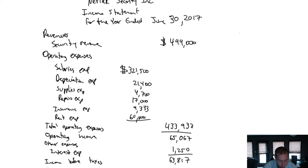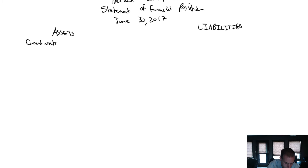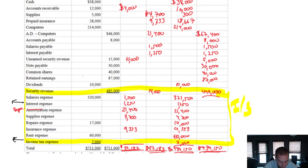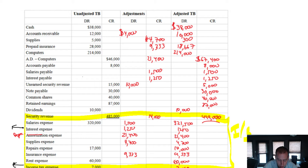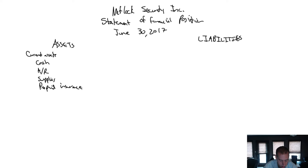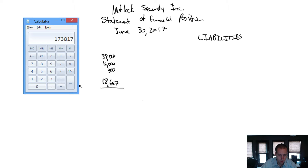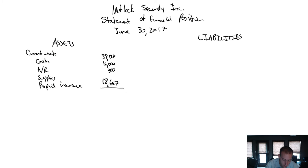So let's go through it: cash, AR, supplies, prepaid insurance. We're listing them in order of liquidity. Since we already have a trial balance, we'll list them in that order. Our ending balances are 38, 16, 300, and 18,667. So 38, 16, 300, and 18,667 totals to 72,967 of current assets.